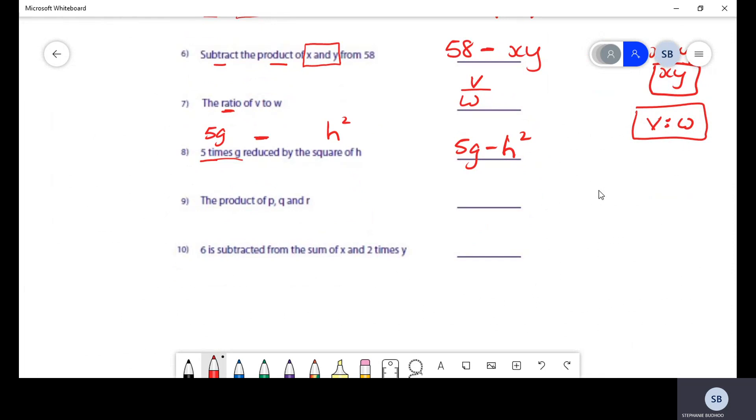Moving on here in our worksheet, they are saying to find the product of p, q, and r. The product of p, q, and r is simply p multiply by q multiply by r, and this can also be rewritten without those multiplication signs as pqr.